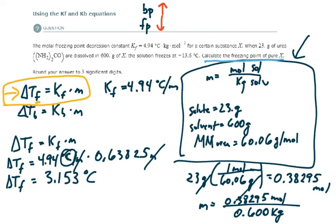So, if the solution froze at negative 13.6 degrees Celsius, and if it's depressed by 3.153 degrees Celsius, then let's just add that back to it, so plus 3.153, bring it closer to 0 degrees Celsius, make it more positive. So negative 13.6 plus 3.153.